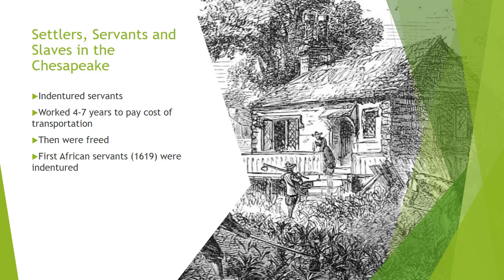The first Africans arrived in the Chesapeake in 1619, purchased from a passing Dutch ship. By all the evidence historians have, the first African servants were also indentured servants — they didn't have hereditary servitude and were freed after a certain number of years. They worked alongside white servants, ran away together, cohabitated with white servants, and even intermarried. Early colonial documents listed both groups, black and white, as servants. Africans were afforded more opportunity to move from servitude to freedom at this time than their descendants would be in later generations.